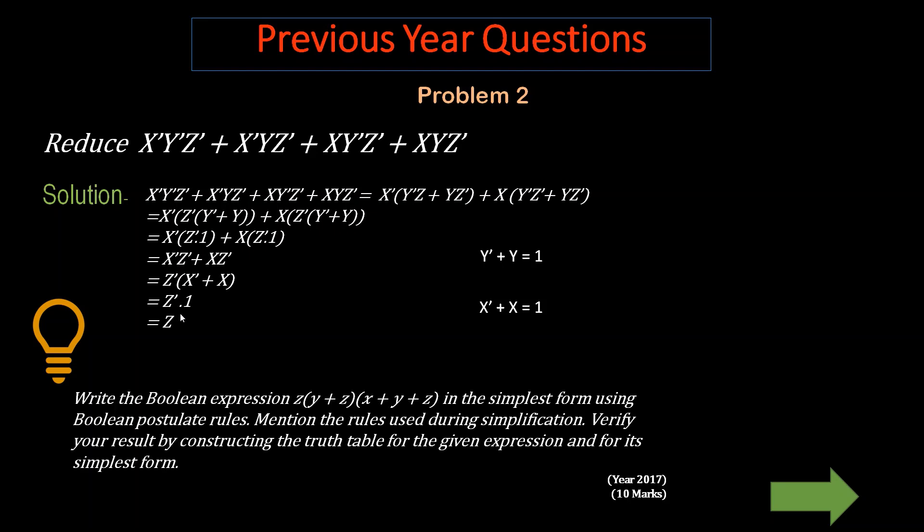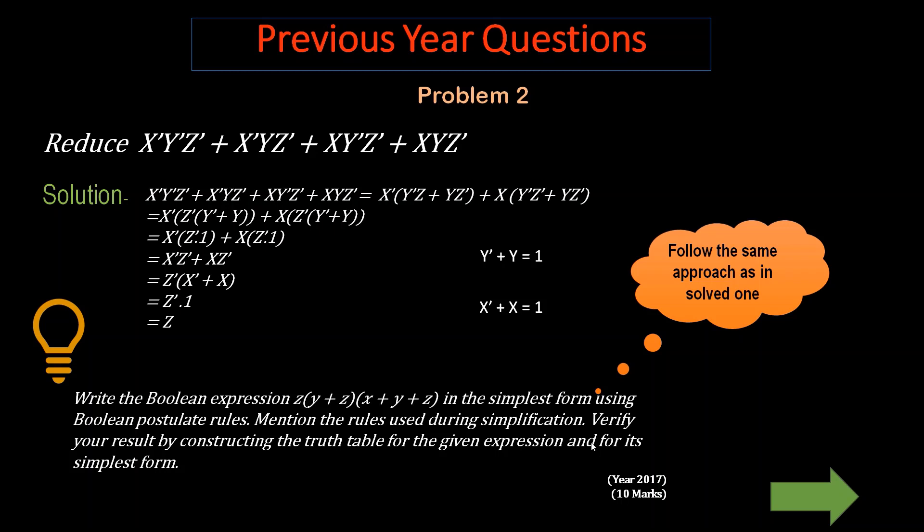Write the Boolean expression in the simplest form using the Boolean postulates rules. Mention the rule used during simplification. Now if you simplify it, write the rules in the side. Your identities should remain on the tip. Now verify your result by constructing the truth table of a given expression for its simplest form. So follow the same approach as in solution 1. Just apply the Boolean identities for multiplication instead of addition.